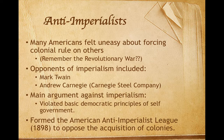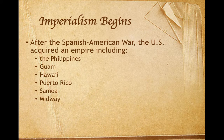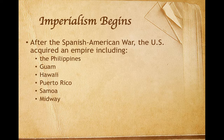On the flip side, there were some anti-imperialists. The United States itself had once consisted of 13 colonies, and even as late as the 1890s, many Americans felt uneasy about forcing colonial rule on others. Opponents of colonialism, like Mark Twain and Andrew Carnegie, felt imperialism violated the basic democratic principles of self-government on which the United States was founded. Some of these anti-imperialists formed the American Anti-Imperialist League in 1898 to oppose the acquisition of new colonies. In the end, imperialists won the argument. After the Spanish-American War, the United States acquired a colonial empire consisting of the Philippines, Guam, Hawaii, Puerto Rico, Samoa, and Midway. One U.S. senator mourned the danger that the nation was to be transformed from a republic founded on the Declaration of Independence into a vulgar, common empire founded on force.